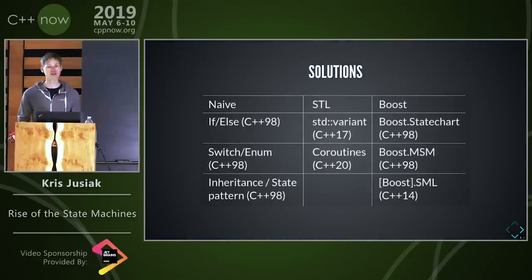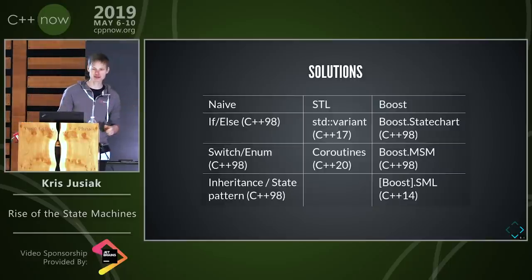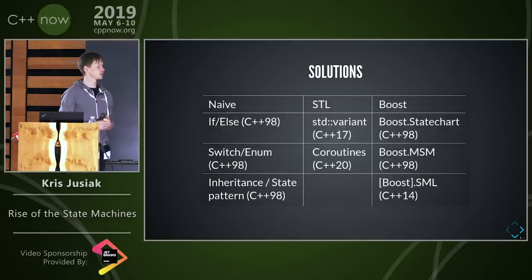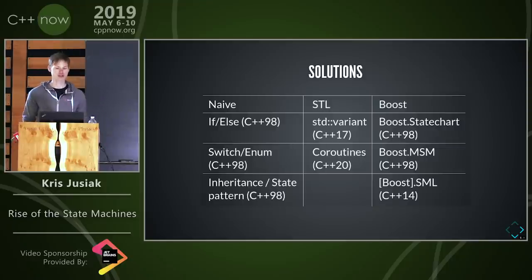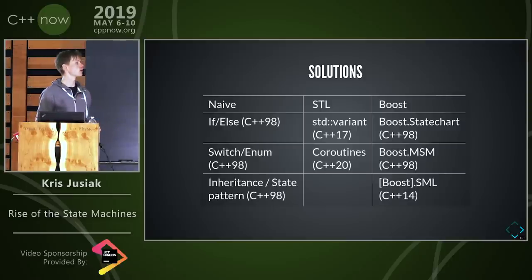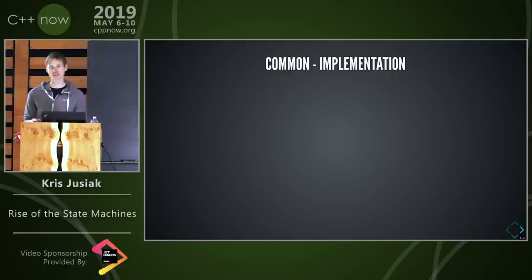Let's dig into the solutions. What solutions are we going to look at? First, the naive kind — if/else; I guess everyone has been there. Then a small improvement: the switch/enum. When we get to object-oriented design we go for the state pattern, especially coming from Java. After that we'll look into STL: C++17 gave us variant, which might be used for implementing simple state machines, plus coroutines as a new idea for implementing state machines.